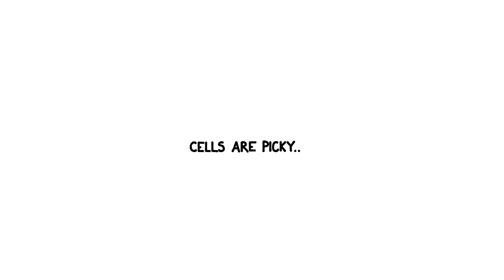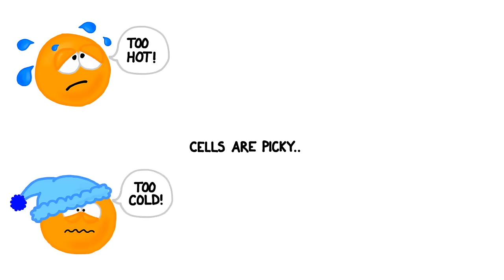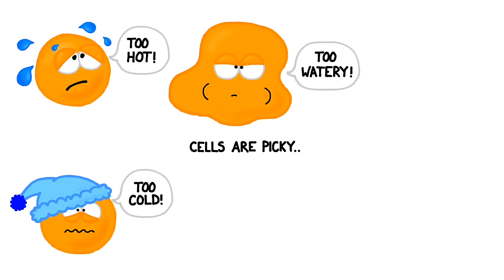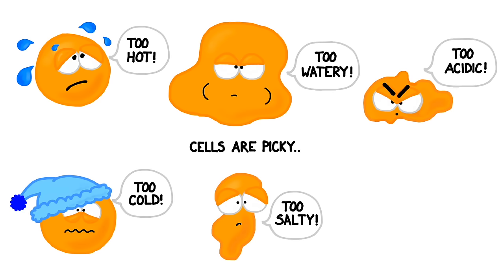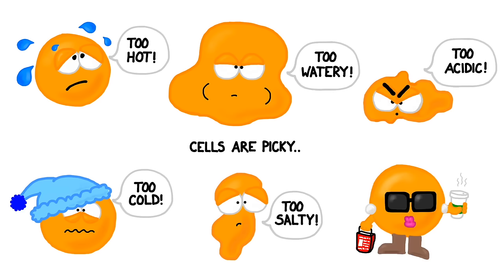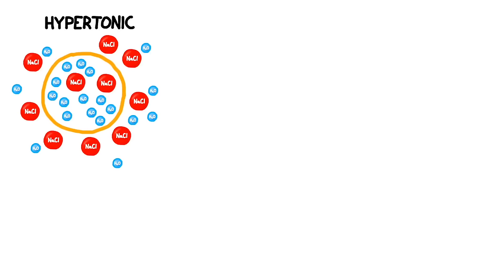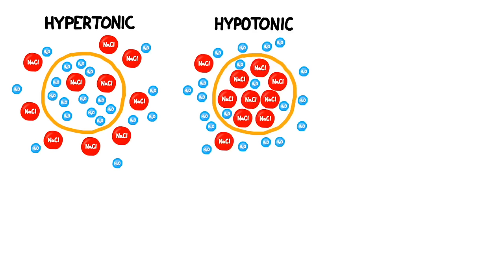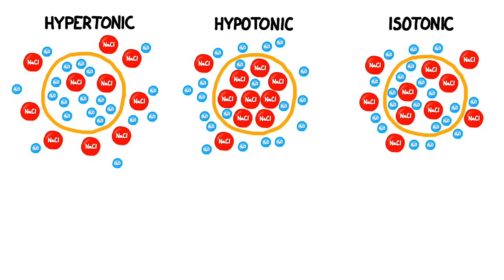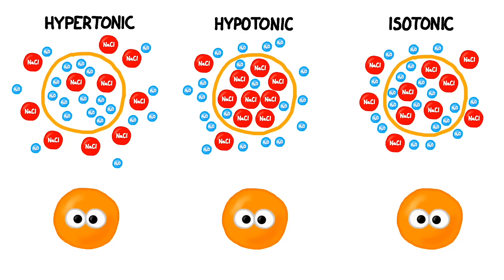Cells have a very finite range of conditions in which they can survive. If it's too hot, too cold, too watery, too salty, too acidic, or too basic, they can't function properly. We're going to explore what happens when you place a cell in a solution that is much more salty, much more watery, or has an equal salt concentration.